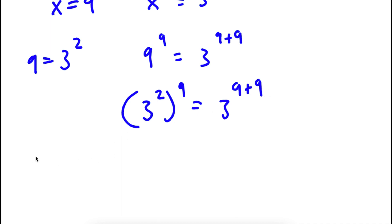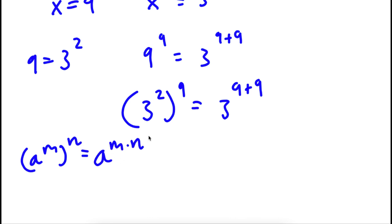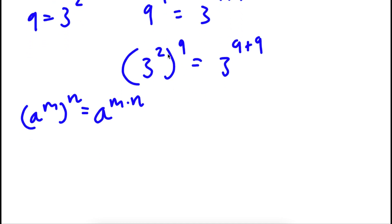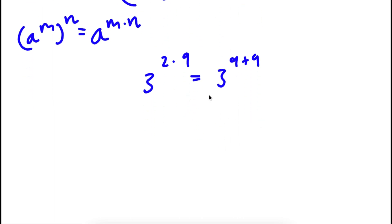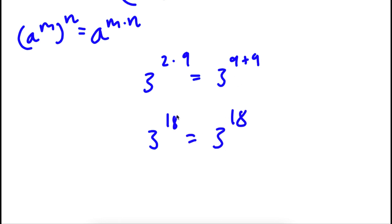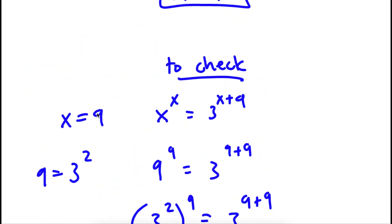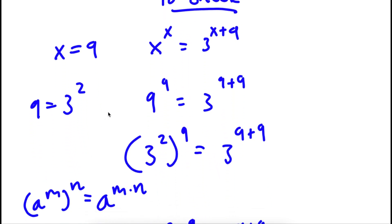Now, using the rule a to the power of m to the power of n equals a to the power of m times n, we get 3 to the power of 2 times 9, which is 3 to the power of 18, equal to 3 to the power of 9 plus 9. Well, 2 times 9 is 18, and 9 plus 9 is also 18. So I have 3 to the power of 18 is equal to 3 to the power of 18, and because this is right, we know that our solution x equals 9 is correct.